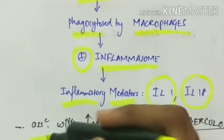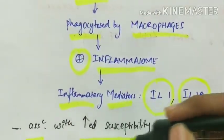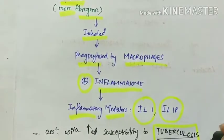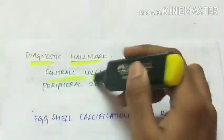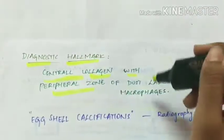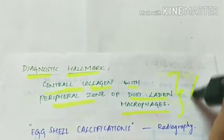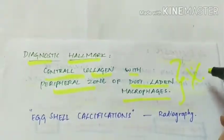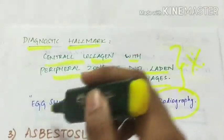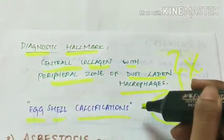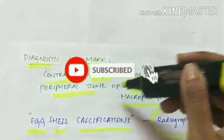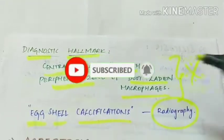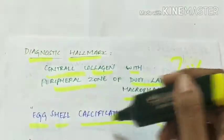Silicosis is associated with increased susceptibility to tuberculosis. The diagnostic hallmark of silicosis is the presence of central collagen with a peripheral zone of dust-laden macrophages. In radiography, egg shell calcifications are seen.